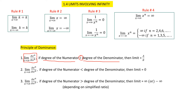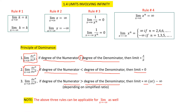Case two: if the degree of the numerator is less than the degree of the denominator, the limit equals zero. Case three: if the degree of the numerator is greater than the degree of the denominator, the limit may be infinity or minus infinity, depending on the simplified ratio of the function. The principle of dominance applies for both limit as x approaches infinity and limit as x approaches minus infinity.